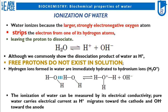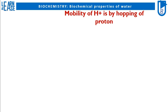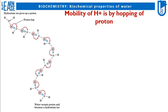H plus migrates toward the cathode and OH minus toward the anode. I will now explain the phenomenon of H plus mobility under the electric field generated by positive and negative electrodes. The mobility of H plus ions occurs by hopping of protons.